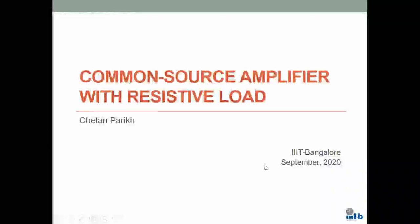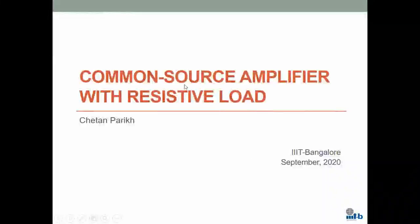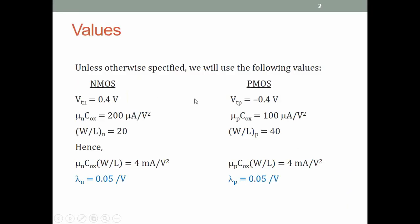In this lecture we look at the common source amplifier with a resistive load and apply the small signal analysis studied last time. The parameters include lambda = 0.05, mu_n * C_ox * W/L = 4 (with W/L = 20, C_ox = 200 micro, mu_n = 0.4), and the same numbers used for the last many classes.